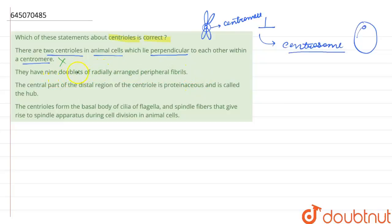The third one is: the central part of the distal region of the centriole is proteinaceous and is called the hub. The central part is present towards the center, that is the point of attachment, so it is not the distal region—it is actually the proximal region.